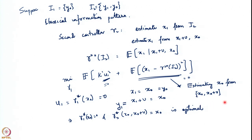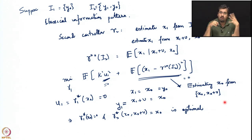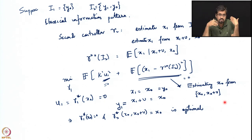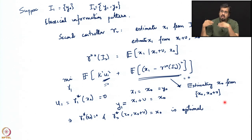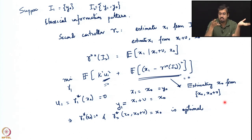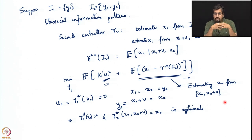This is something he can do because the second controller always has access to x0. So the first controller does not have to bother about what information is going to be there with the second controller — he just has to give the second controller the right sort of target to estimate. This is what happens in a problem when you have a classical information structure.